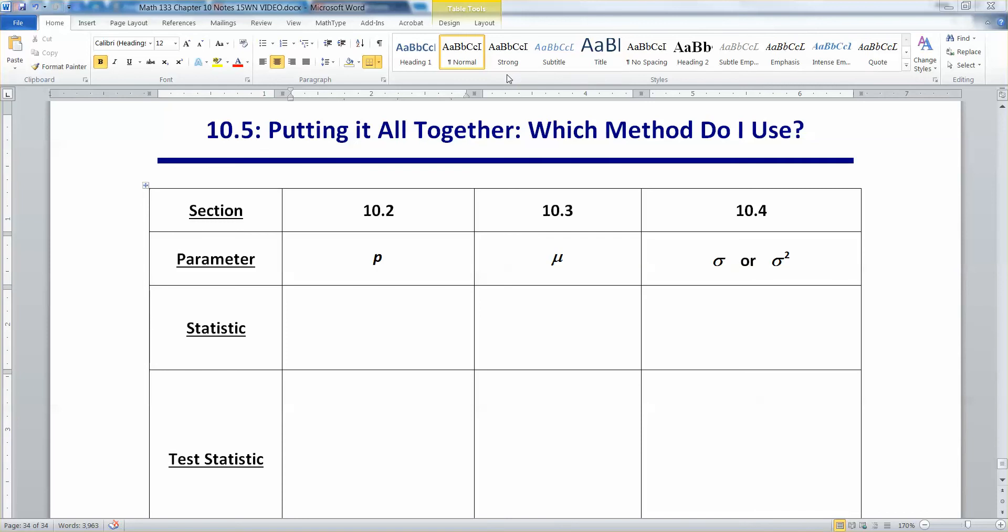In chapter 10, we saw three different major hypothesis tests for three different, well, four different parameters, actually. So we want to take a moment and regroup and make sure that we understand all the different types and when they show up.